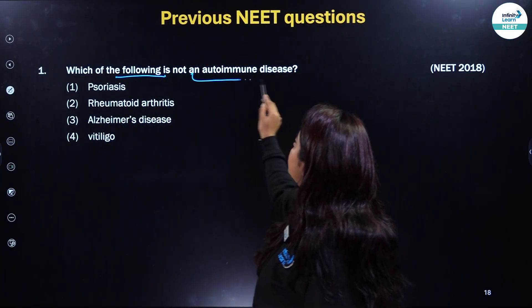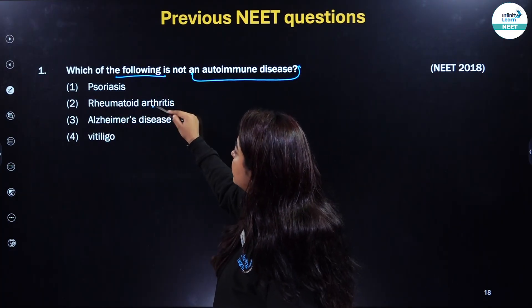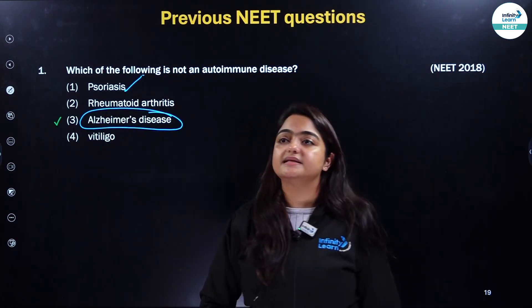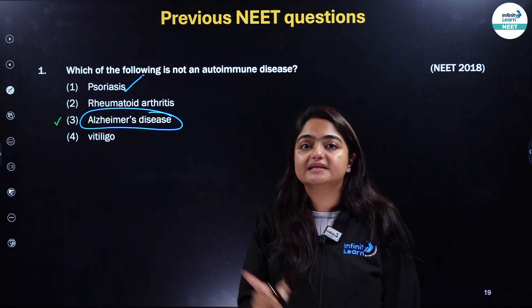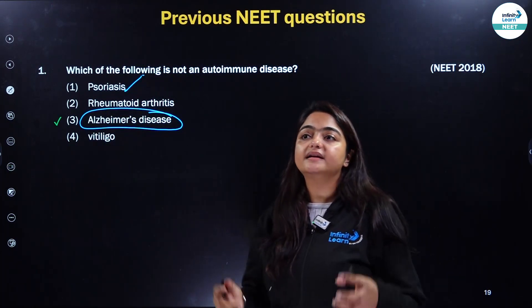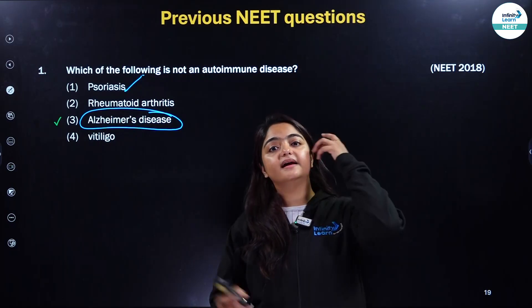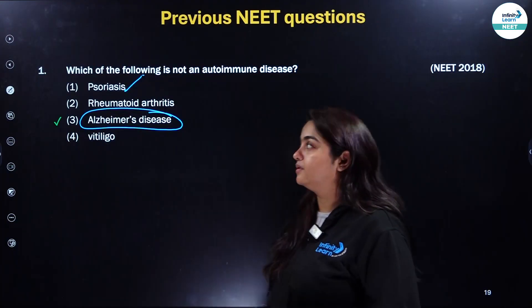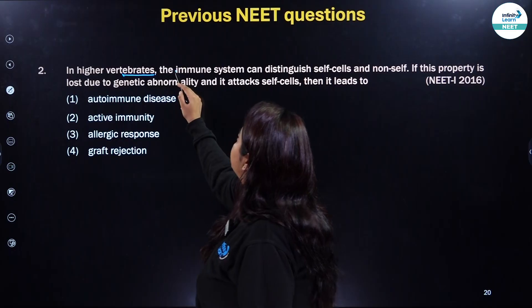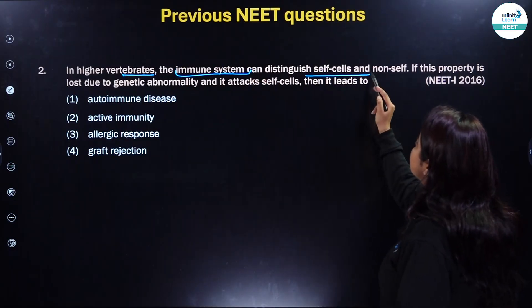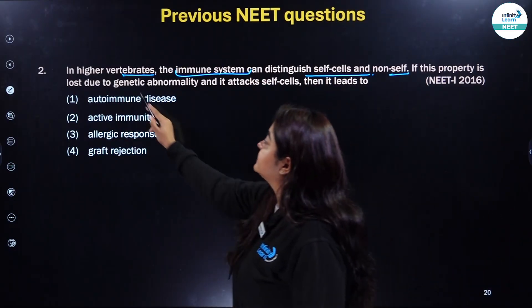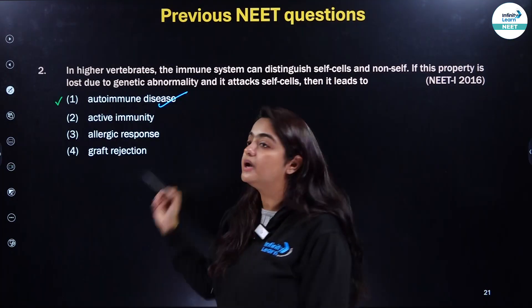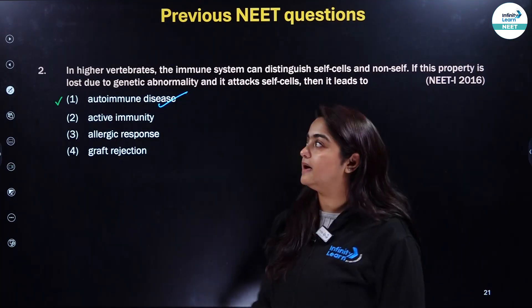Which of the following is not an autoimmune disease? Rheumatoid arthritis, vitiligo, and psoriasis are all autoimmune diseases, so only Alzheimer's disease is the one which is not an autoimmune disease. Autoimmune disease is basically a disease where the cells of our body start attacking their own cells — they do not differentiate between self and non-self. In higher vertebrates, the immune system can distinguish self-cells and non-self. If this property is lost due to genetic abnormality and it attacks self-cells, it leads to autoimmune disease, where rheumatoid arthritis is one example.